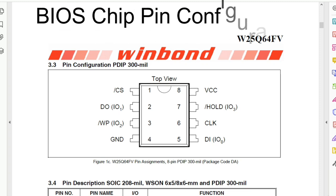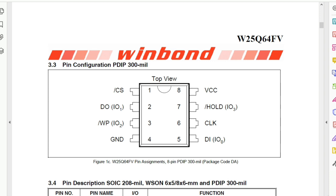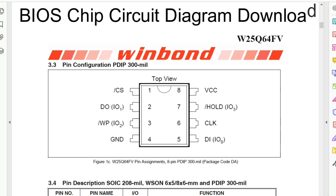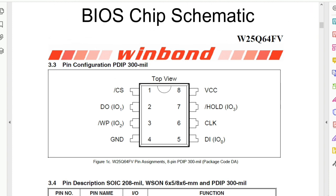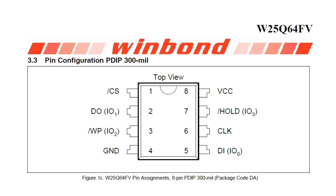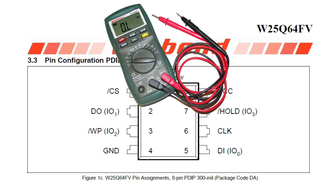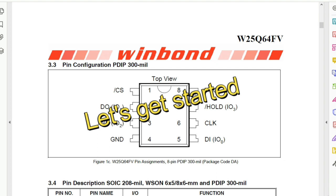We're going to see the BIOS chip pin configuration. We're also going to see how to download the circuit diagram of every BIOS chip you want. We will also see the schematic of the BIOS chip, and we will see some real BIOS chips in the motherboard. We will use the multimeter to check its pins, including the VCC pin and the ground pin.